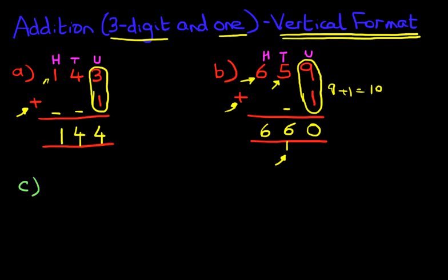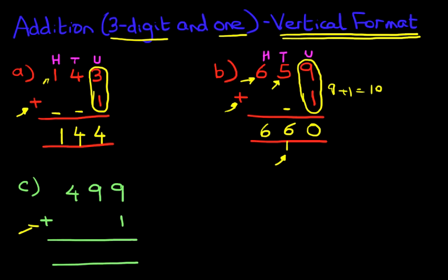We're now going to move on to our next example. This time we've got a slightly tricky one — four hundred and ninety-nine plus one. I'm sure from the previous tutorial you can work this out when we did this during the horizontal format, but let's work it through in the vertical format. We're going to label the columns: units, tens, hundreds. You do not need to label the columns — we're doing this just to illustrate what we are doing. And where do we start the addition? We always start on the right-hand side first.